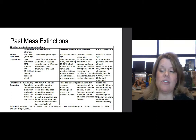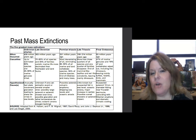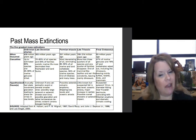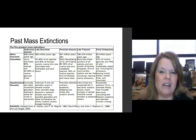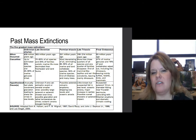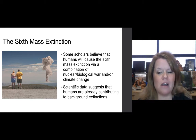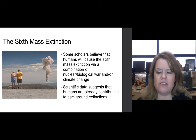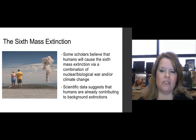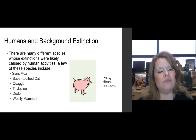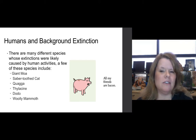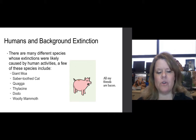We have found some evidence to support this event: there was very accelerated volcanism around the planet, and a six-mile-wide meteor smashed into the Yucatan Peninsula of Mexico. In each of these cases, a combination of causes was likely involved. Some scholars believe that humans will cause the sixth mass extinction via a combination of nuclear or biological war and climate change. Scientific data suggests humans are already contributing to background extinctions. Species likely caused by human activities include the giant moa, saber-toothed cat, quagga, thylacine, dodo bird, and woolly mammoth.